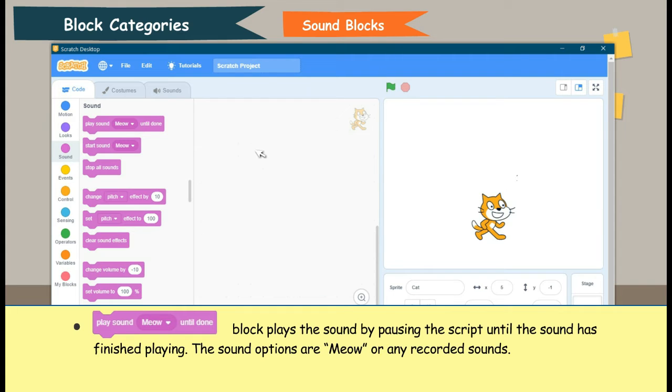Play Sound Meow until Done block plays the sound by pausing the script until the sound has finished playing. The sound options are Meow or any recorded sounds.